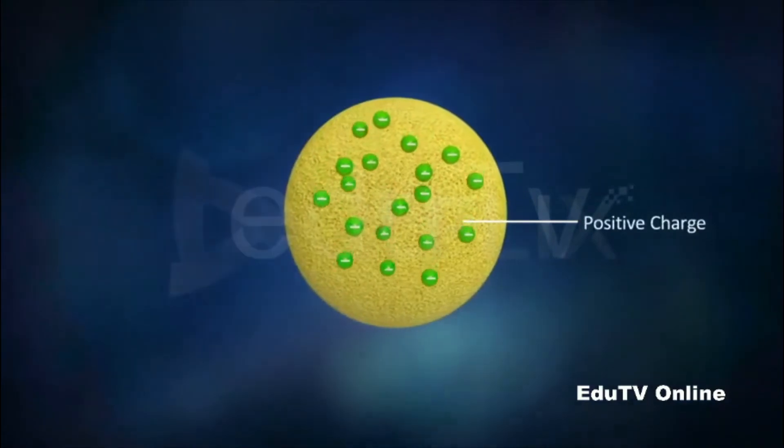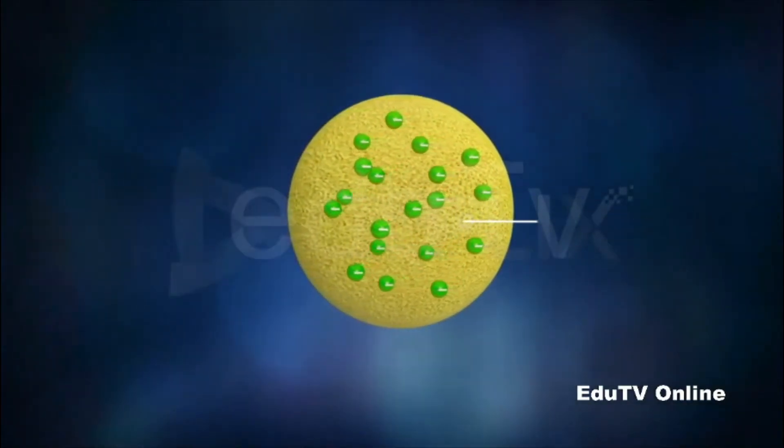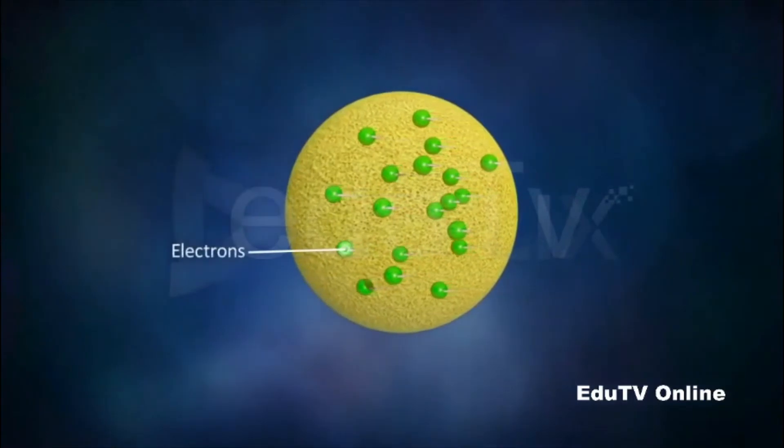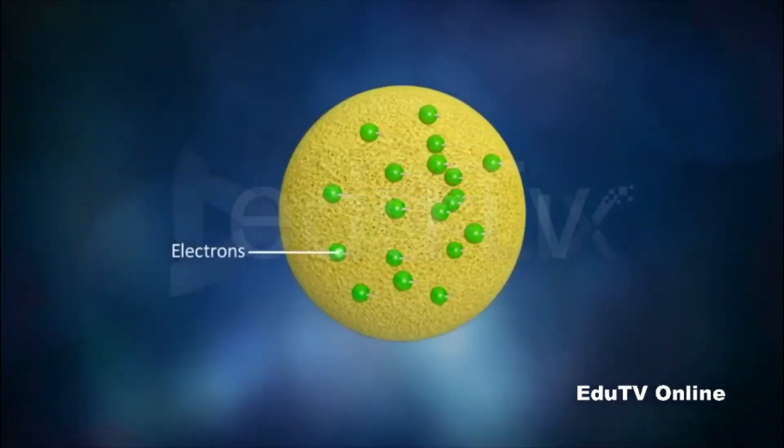According to this model, an atom was made up of positively charged substances in the form of a sphere. Negatively charged electrons were embedded in it.